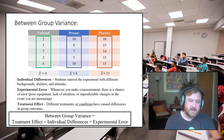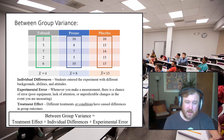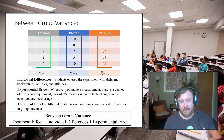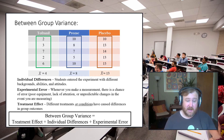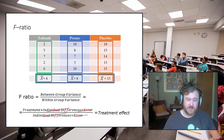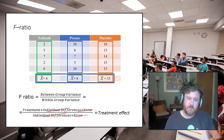Between-group variance also contains individual differences and experimental error, but it additionally contains the treatment effect — how much the different levels of the independent variable explain differences in the dependent variable. So between-group variance equals treatment effect plus individual differences plus experimental error. When we form the F ratio, the individual differences and error cancel in the numerator and denominator, and what's left is the treatment effect.